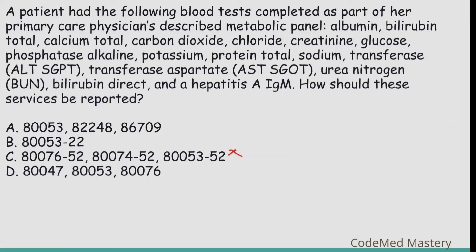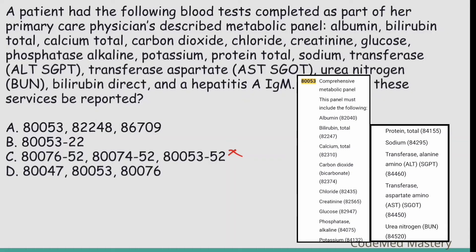We are left with options A, B, and D. Option A mentions 80053, which is for the Comprehensive Metabolic Panel. The tests involved are albumin, bilirubin total, calcium total, carbon dioxide, chloride, creatinine, glucose, phosphatase alkaline, potassium, protein total, sodium, transferase ALT-SGPT, transferase aspartate AST-SGOT, and urea nitrogen. All these tests from albumin through urea nitrogen are included in 80053. Two extra tests remain: bilirubin direct and hepatitis A IgM.